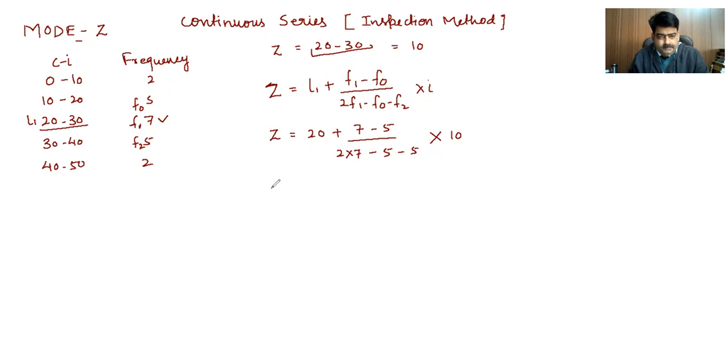So in the denominator, 2 times 7 is 14, and 14 minus 10 equals 4. This gives us 2 upon 4 into 10, which equals 5. Therefore, mode equals 20 plus 5.